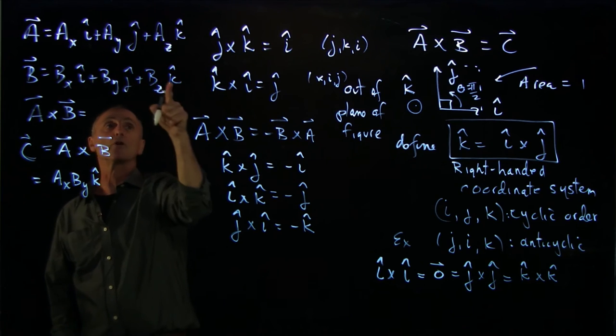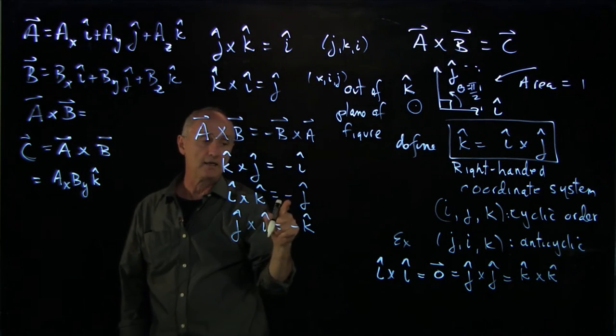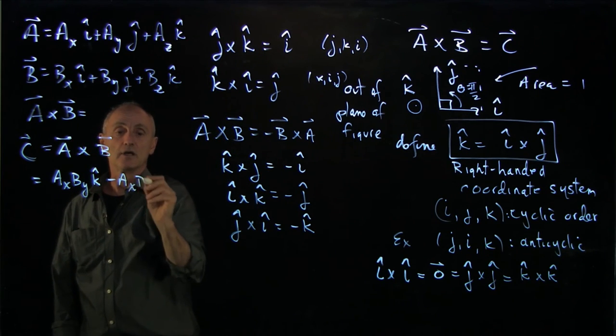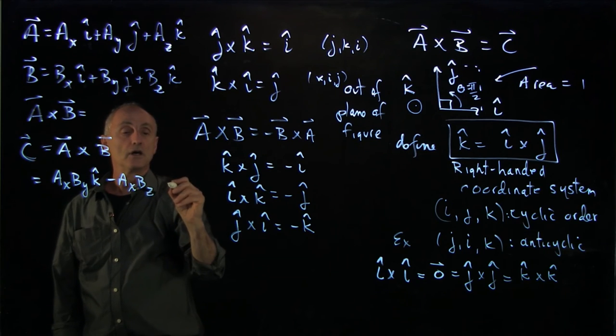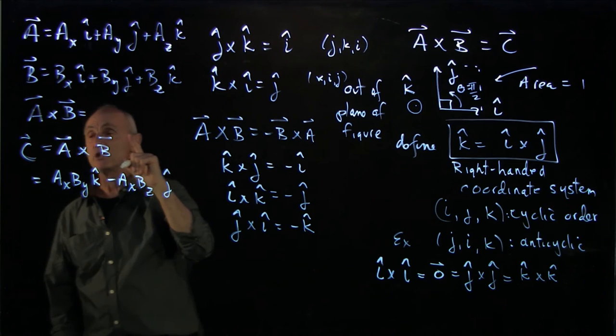And now let's do i hat cross k hat. Notice that's anti-cyclic, i k minus j. So our next term is minus ax bz j hat. So there's the first two. And now let's just continue this process.